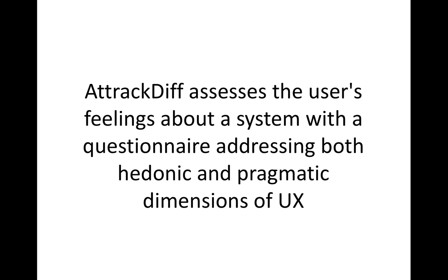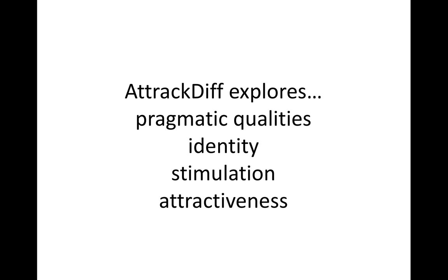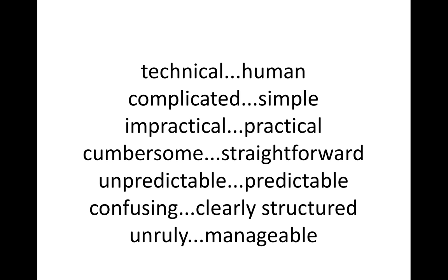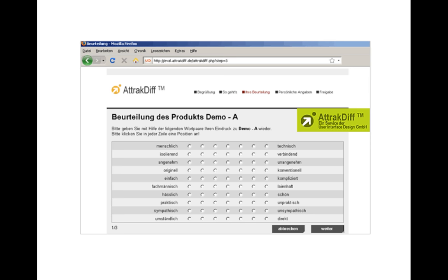AttrakDiff is also a questionnaire, but in this case it doesn't measure only pragmatic aspects of your product — it measures both the hedonic and the pragmatic aspects. It assesses user feelings about the system with a questionnaire related to the UX experience. AttrakDiff explores pragmatic qualities like identity, stimulation, and attractiveness, as well as attributes ranging from technical to human, complicated, impractical, unpredictable, confusing, and grueling. This is the AttrakDiff online questionnaire that you provide to users after they use your product — usually a high-fidelity prototype or a product already on the market.